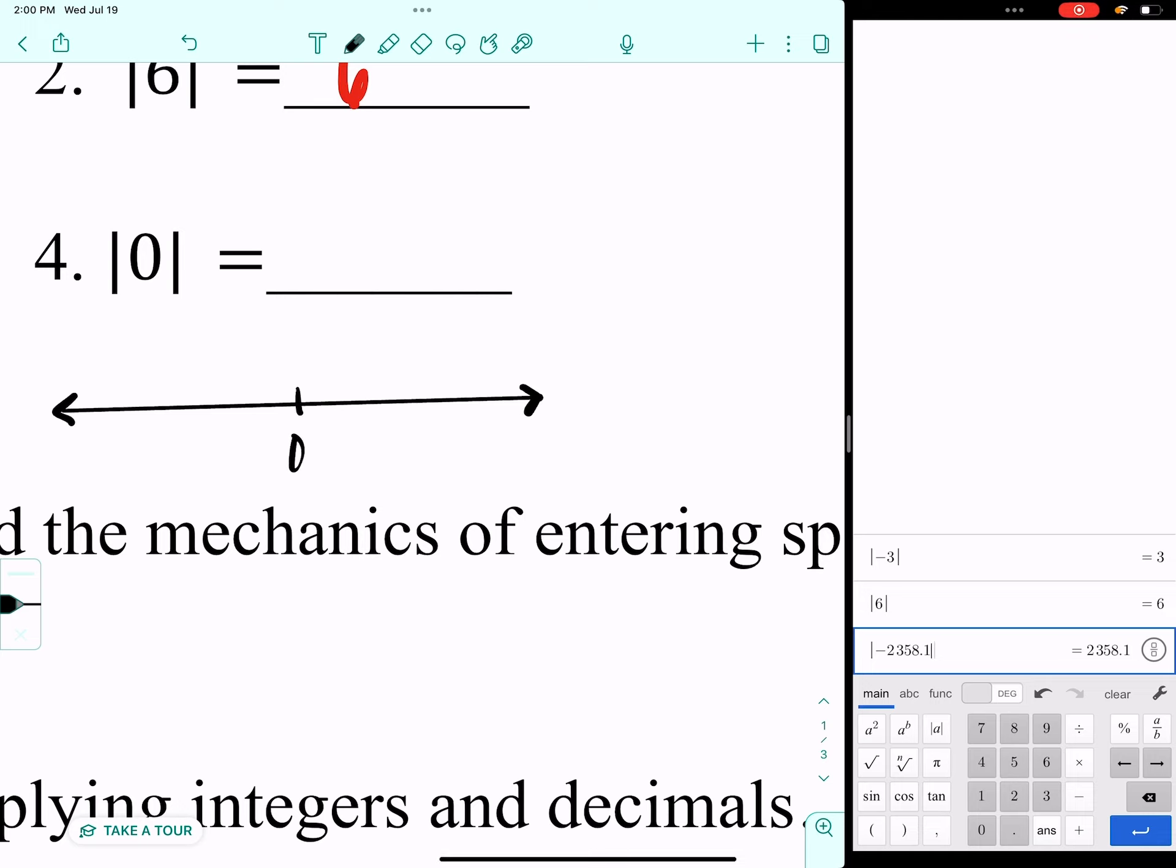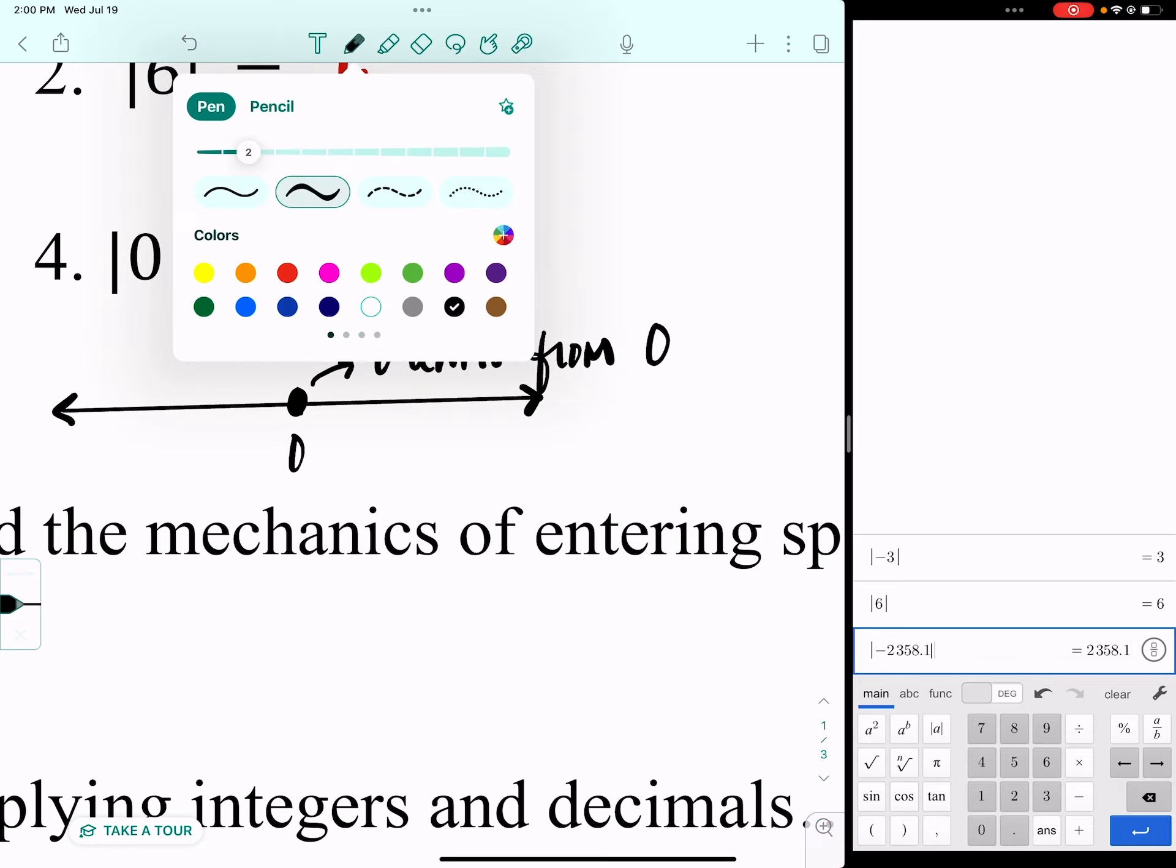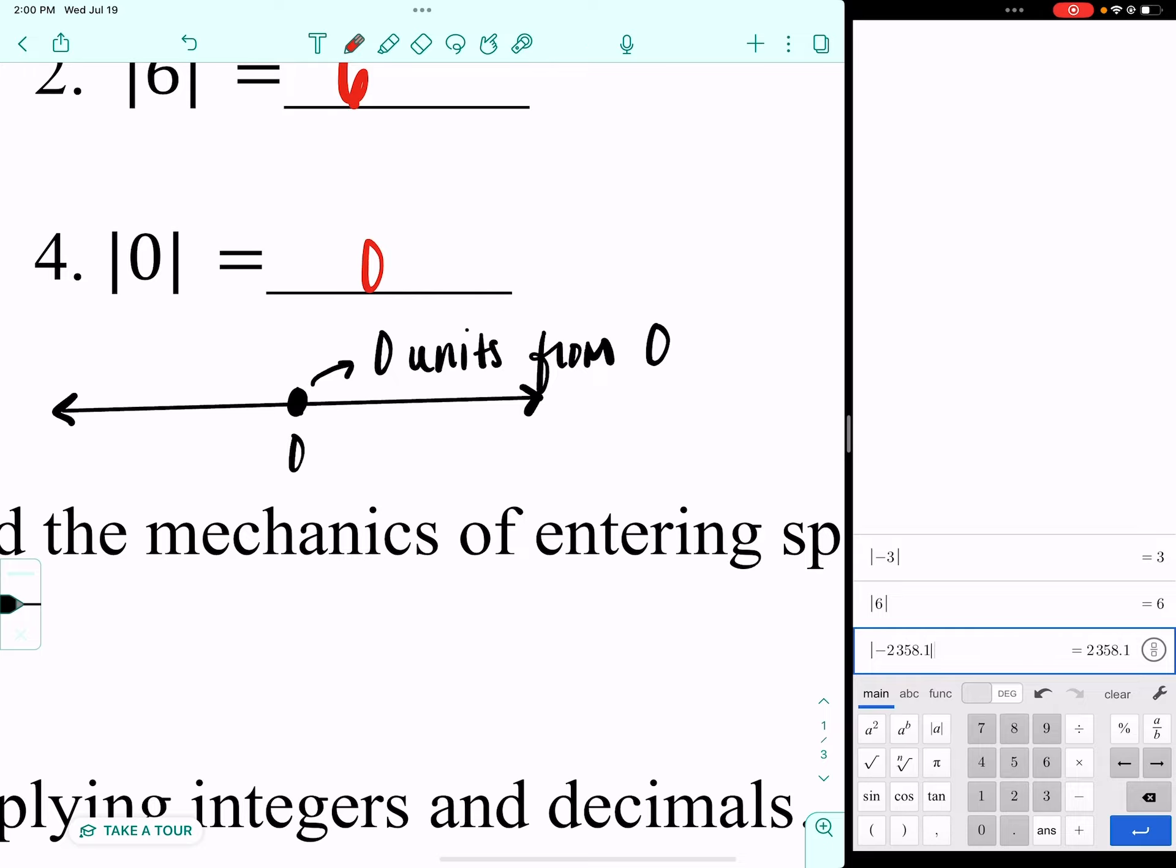I'm going to put my zero in there. Zero is zero units, zero jumps from itself. So the absolute value of zero is zero.